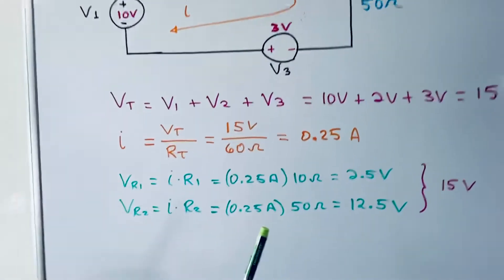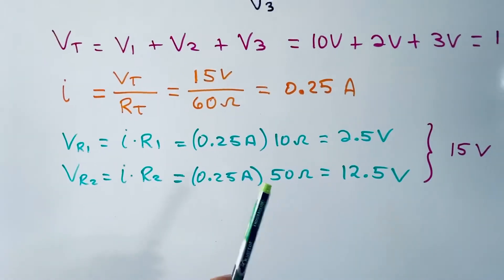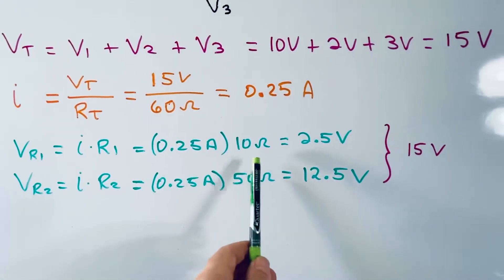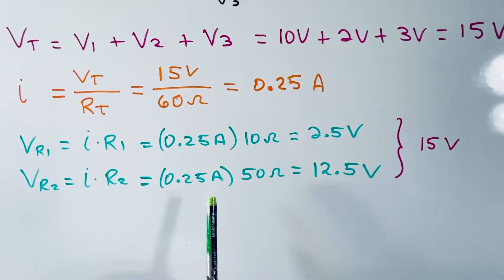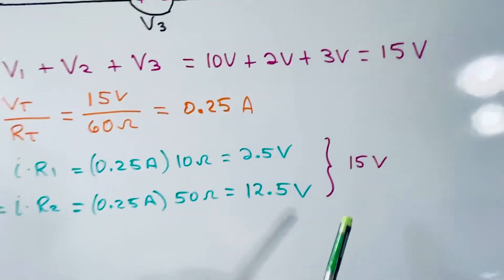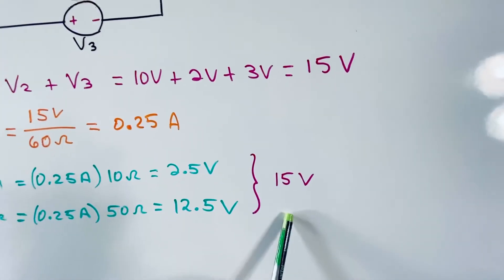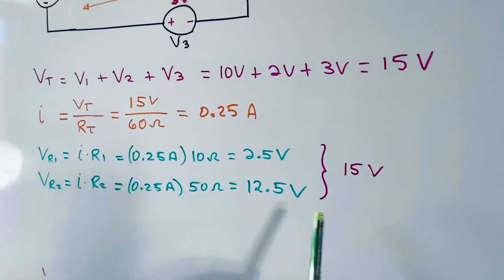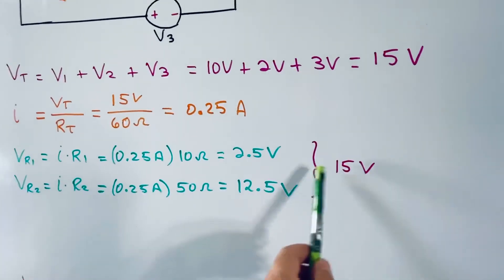So we do those products. 0.25 times 10 ohms is 2.5 volts. 0.25 amps times 50 ohms is 12.5, and if you add them you get 15 volts. And 15 volts is the voltage across both resistors.